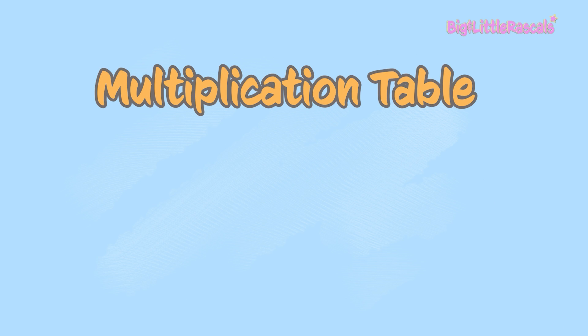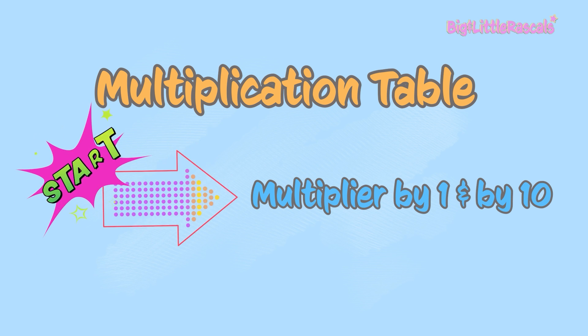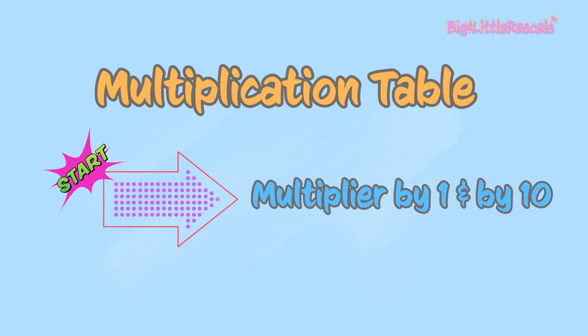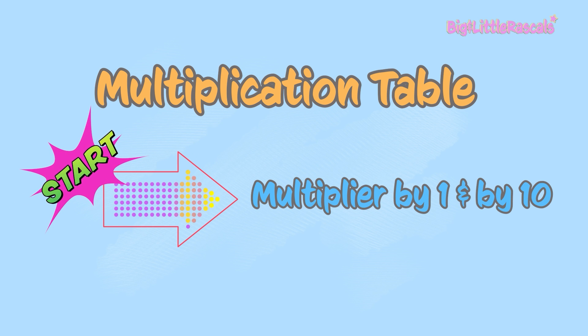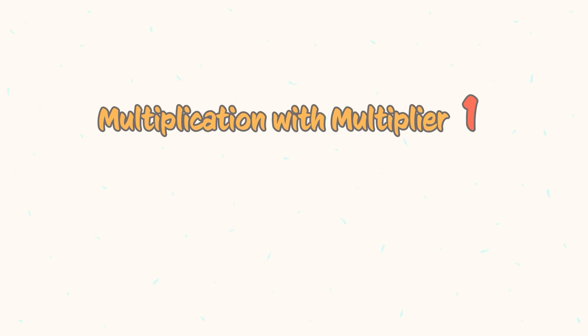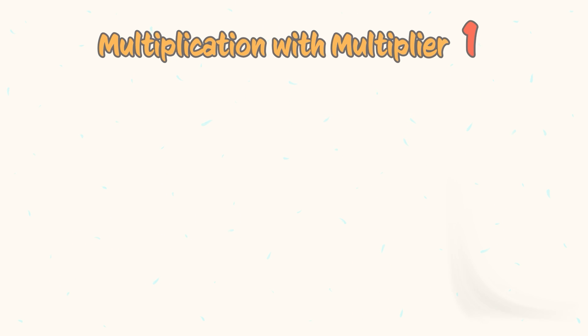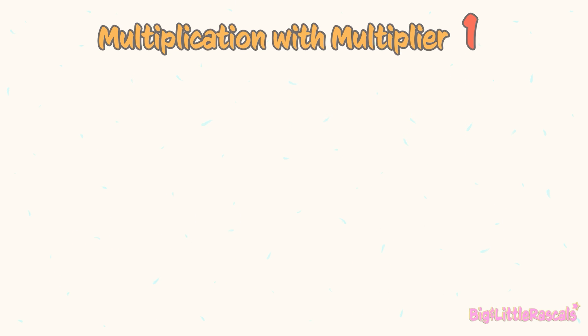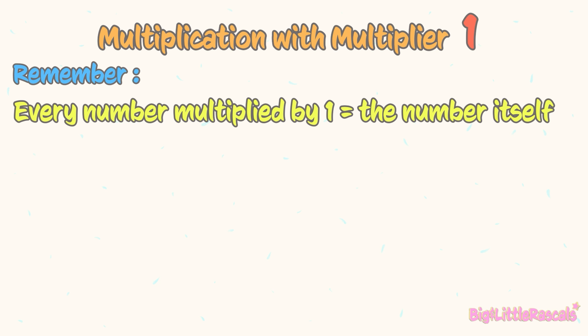Now, let's start going into the multiplication table. Multiplication by 1 or by 10 are very simple and we don't have to memorize them. Let's start with multiplication with multiplier 1. Easy! You just need to remember the rule: every number multiplied by 1 is the number itself.